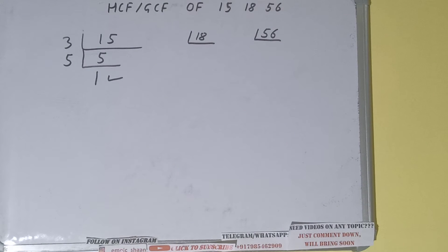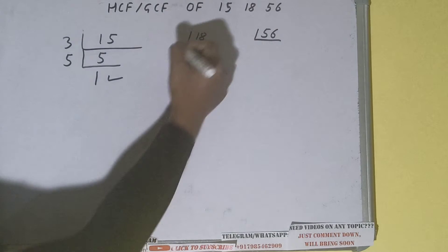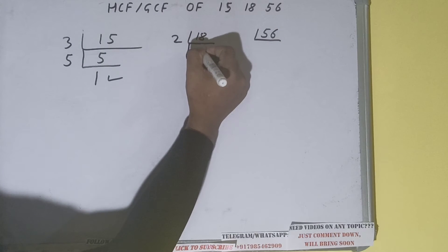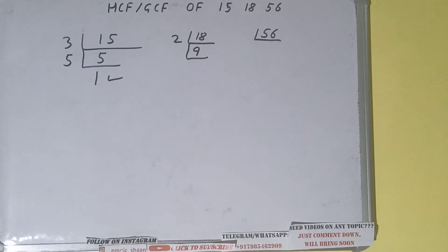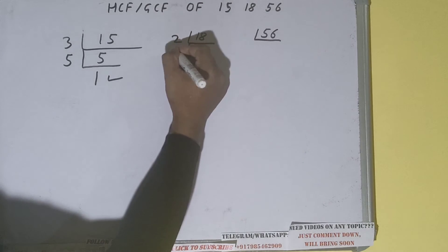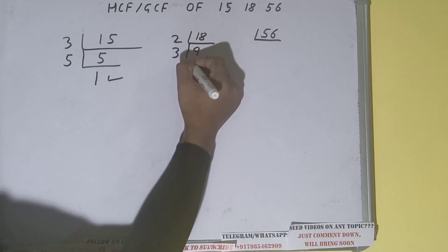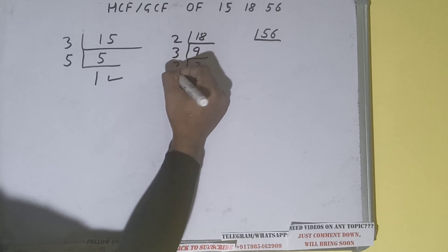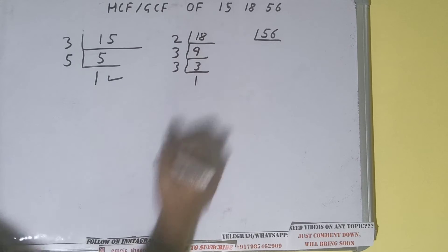Now we need to do the same with the number 18. Is 18 divisible by 2? Yes it is, because it is even. So divide it and we'll be getting 9. Is 9 divisible by 2? No, it is an odd number. So we'll go to the next lowest prime number, which is 3. Is 9 divisible by 3? Yes it is, and we'll be having 3.